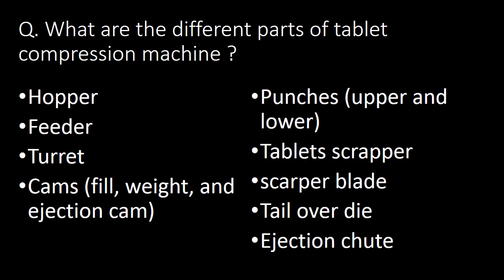Next question: what are the different parts of the tablet compression machine? The parts are: hopper, feeder, turret, various cams such as filling cam, weight cam, ejection cam, punches, tablet scraper, scraper blade, tail over die, and ejection chute.